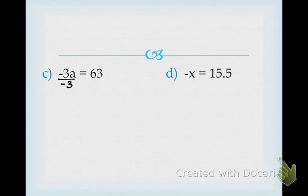Rule number 3: when you do it to one side, you must do it to the other — we've got to be fair. Divide by negative 3 on the other side too. What is negative 3 divided by negative 3? If you have two negative numbers, they cancel out and become a positive. So negative 3 divided by negative 3 equals 1. I've got 1a, but you don't have to write that 1 — it's an understood 1. Equals: what is 63 divided by negative 3? Negative 21 is correct.